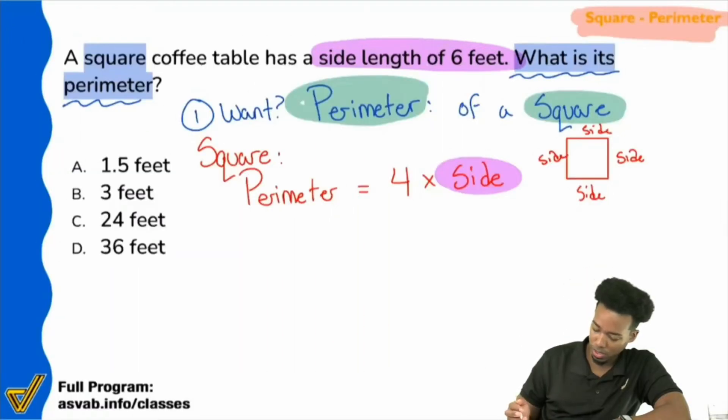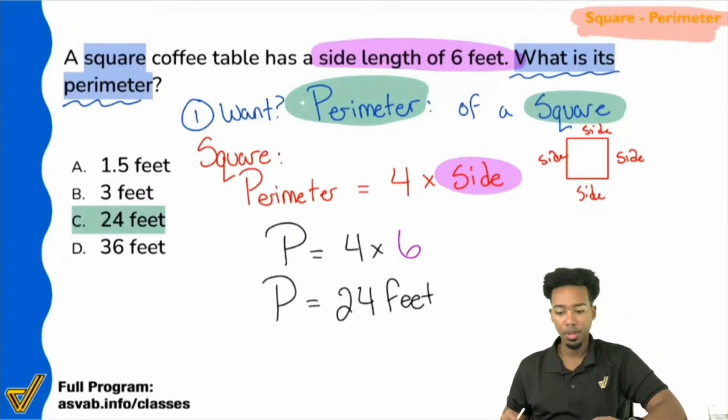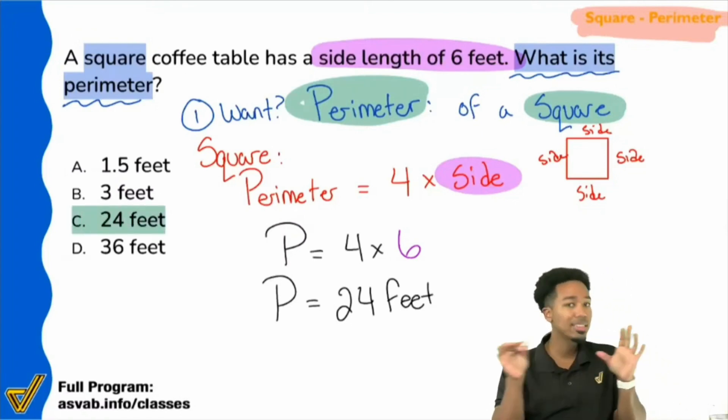Side length of six. If we plug that in, perimeter equals four times the side, which is six. Everybody, four times six is what? 24 feet. And that is going to be answer choice C. And that's why C is correct in this case.